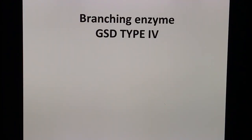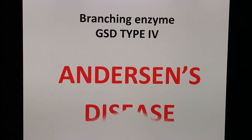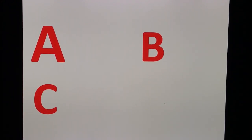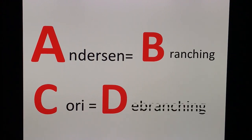Then we go to the branching enzyme deficiency, which is glycogen storage disease type 4, known as Anderson's disease. Here's a visual mnemonic using the alphabet — A, B, C, D: Anderson's disease involves the branching enzyme; Cori's disease involves the debranching enzyme. So A-B-C-D: Anderson's is branching, Cori's is debranching.